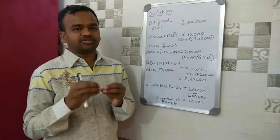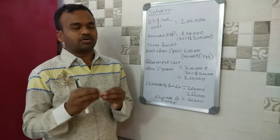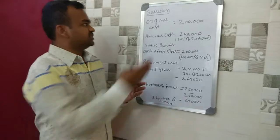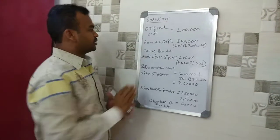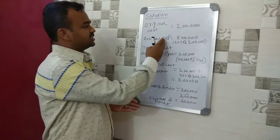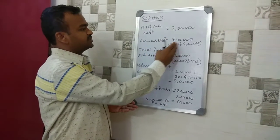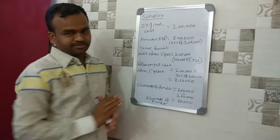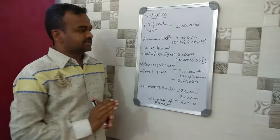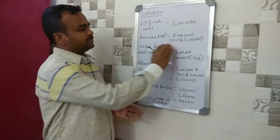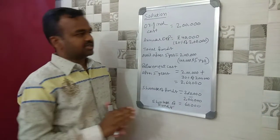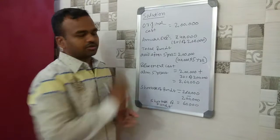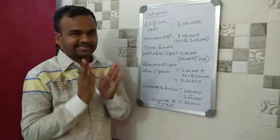The original cost is Rs. 2,00,000. Annual depreciation is 20% of Rs. 2,00,000, so 20% of two lakh rupees equals Rs. 40,000. This is the annual depreciation.